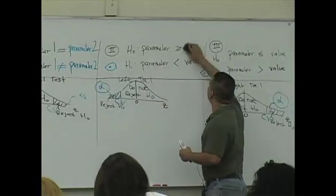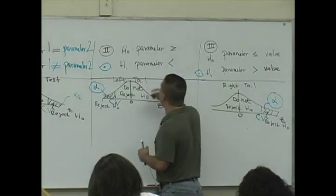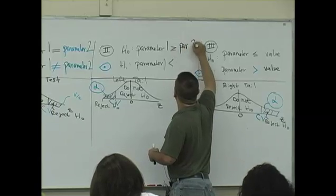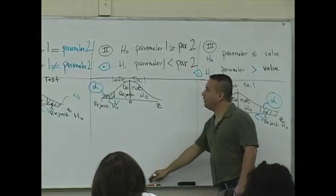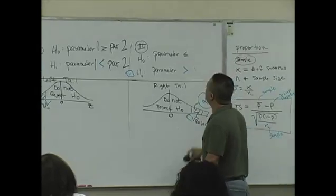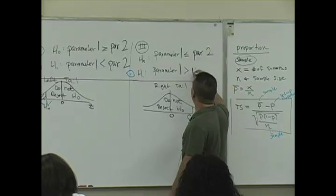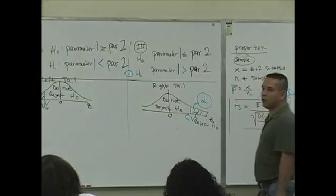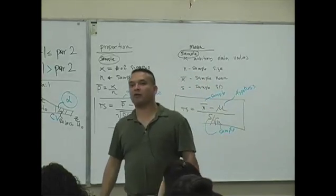Parameter one is no longer compared to a value. You're comparing two parameters: parameter one on the left, parameter two on the right. The same applies for all three hypothesis setups — you're comparing two parameters, not a parameter to a value.